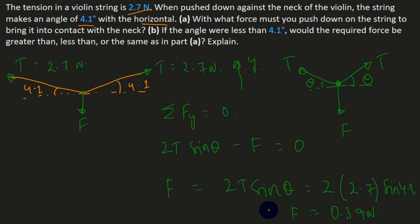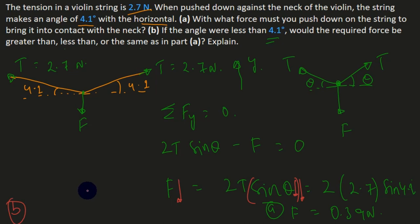For part (b): if theta is kept less than 4.1 degrees, what would the required force be — greater than, less than, or same as part (a)? If you decrease theta, sin θ also decreases, so F = 2T sinθ also decreases. Therefore the required force would be less than part (a).